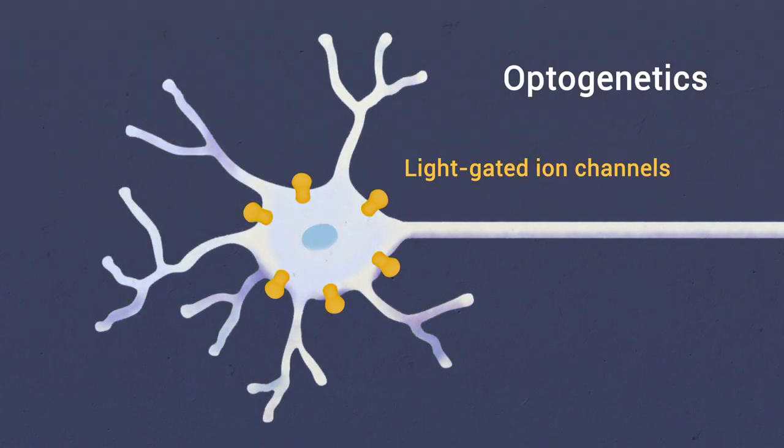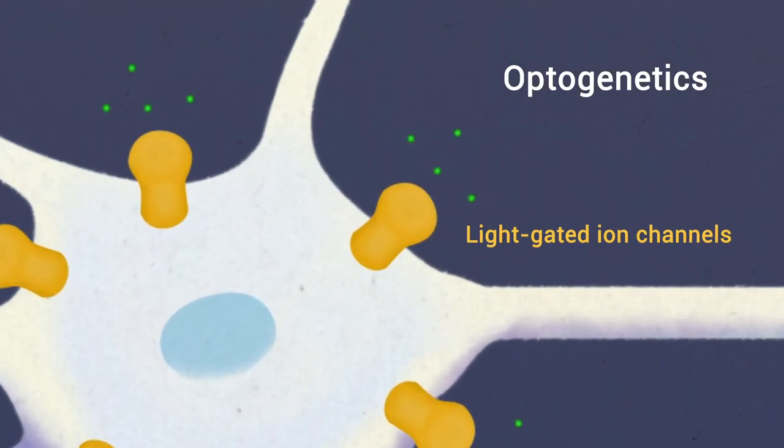When light is shown on the cell, these pore-like proteins open their channels. This allows ions to move into or out of the neuron.